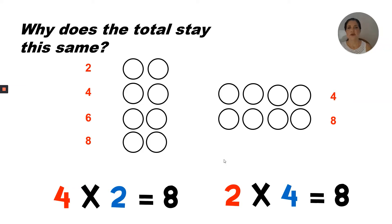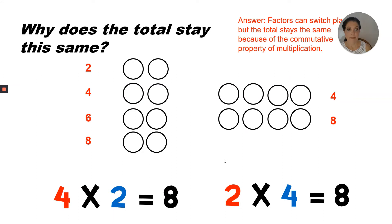Why does the total stay the same? Factors can switch places, but the total stays the same because of the commutative property of multiplication.